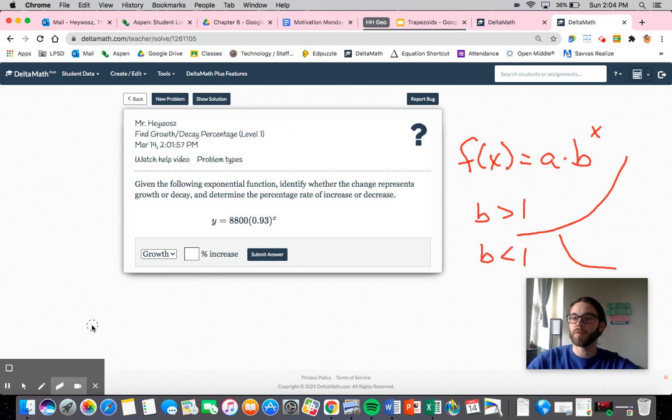So those two pieces of information go hand in hand with exponential growth and decay. When we're talking about exponential growth and decay, we still have our a being our initial value, like our starting population, our starting car value, our starting amount of money. And b now is going to be the growth factor, the decay factor.